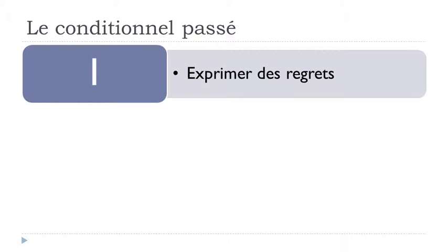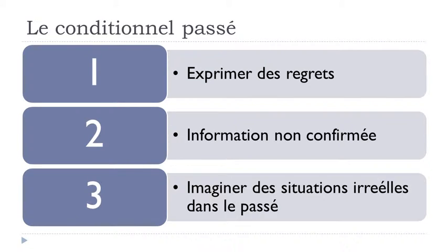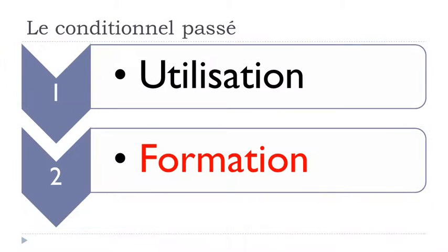The first use of the conditionnel passé is to express regrets — exprimer des regrets. The second use is une information non confirmée: when the news reports something that happened but doesn't have all the elements to confirm it, they use the conditionnel passé. The third use is imaginer des situations irréelles dans le passé — imagining situations that are not real and that take place in the past.